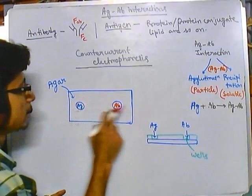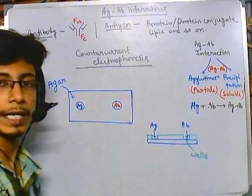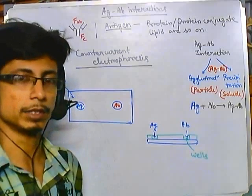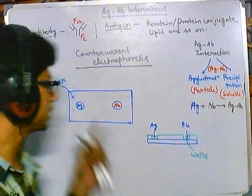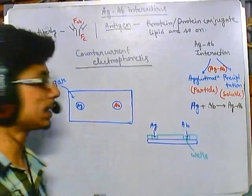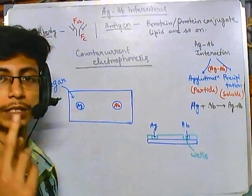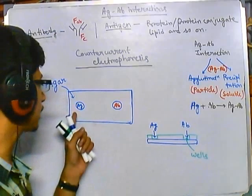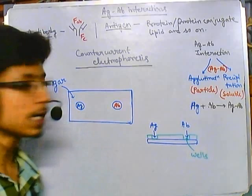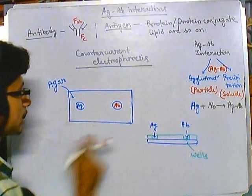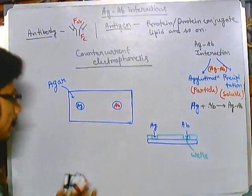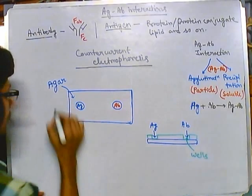Suppose this antigen is unknown — we don't know whether it will interact with our desired antibody or not. In our lab we have a set of known antibodies, and this is a new antigen. If we understand that this antigen binds to a known antibody, we can learn the function or type of this antigen.